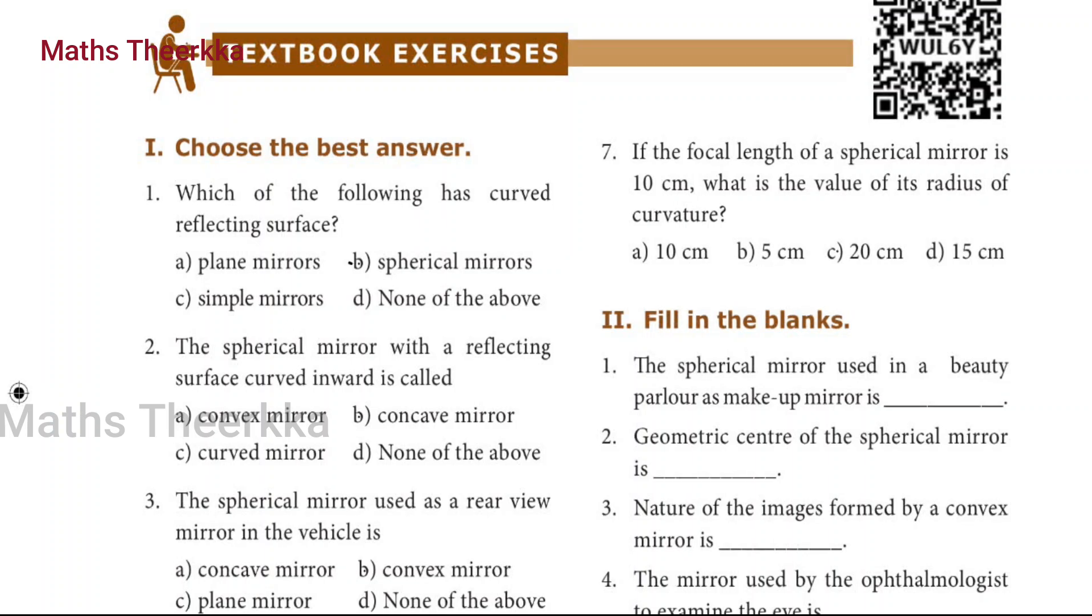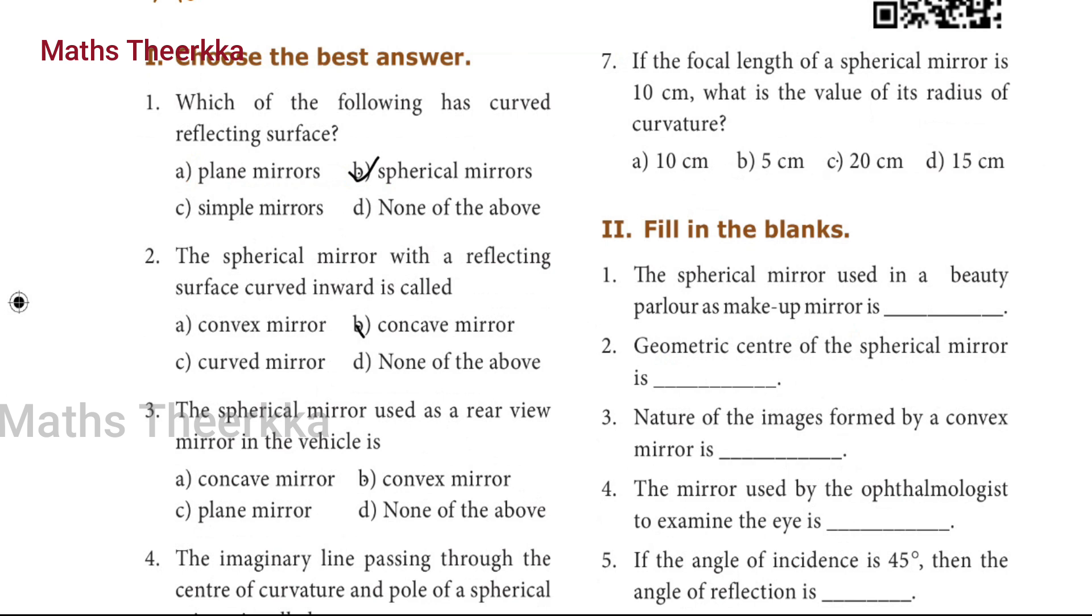8th Standard Science Lesson 3: Light. Textbook Exercises. First section, choose the best answer. First question: which of the following has curved reflecting surface? Answer: B, spherical mirrors. Second question: the spherical mirror with a reflecting surface curved inward is called? Answer: Option B, concave mirror.